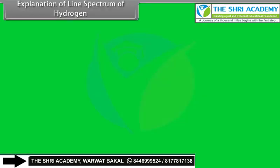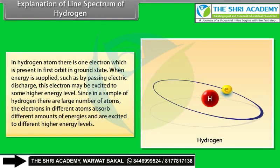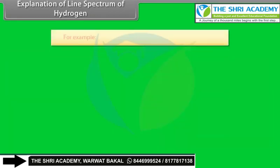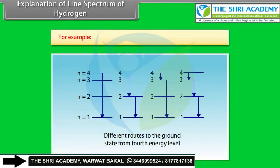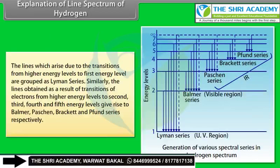Explanation of the hydrogen line spectrum: In hydrogen, the single electron is in the first orbit in the ground state. When energy is supplied by electric discharge, it is excited to higher energy levels. In a sample with large numbers of atoms, electrons absorb different amounts of energy and are excited to different levels. An electron in the fourth level (n=4) may jump directly to n=1, or via n=2 then n=1, or via n=3 then n=2 then n=1. Transitions to n=1 form the Lyman series.